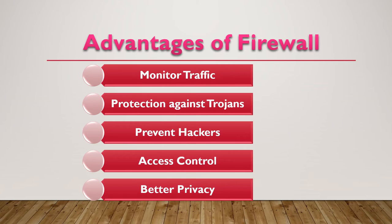The third advantage is to prevent hackers. Hackers on the internet constantly look for computers in order to carry out their illegal activities. When hackers find such computers, they will start doing malicious activities such as spreading viruses. Apart from those hackers, there can be unknown people such as neighbors looking for an open internet connection. Hence to prevent such intrusions, it is a good idea to have firewall security. The fourth advantage is access control. Firewalls come with an access policy that can be implemented for certain hosts and services. Some hosts can be exploited by attackers, so the best approach is to block such hosts from accessing the system, and these access policies can be enforced.